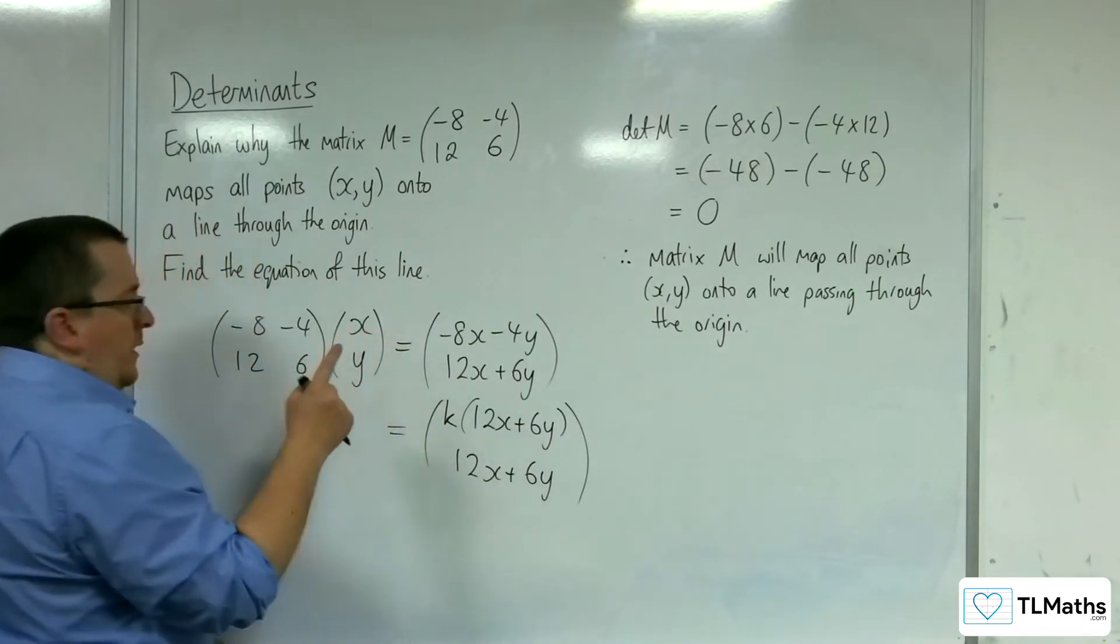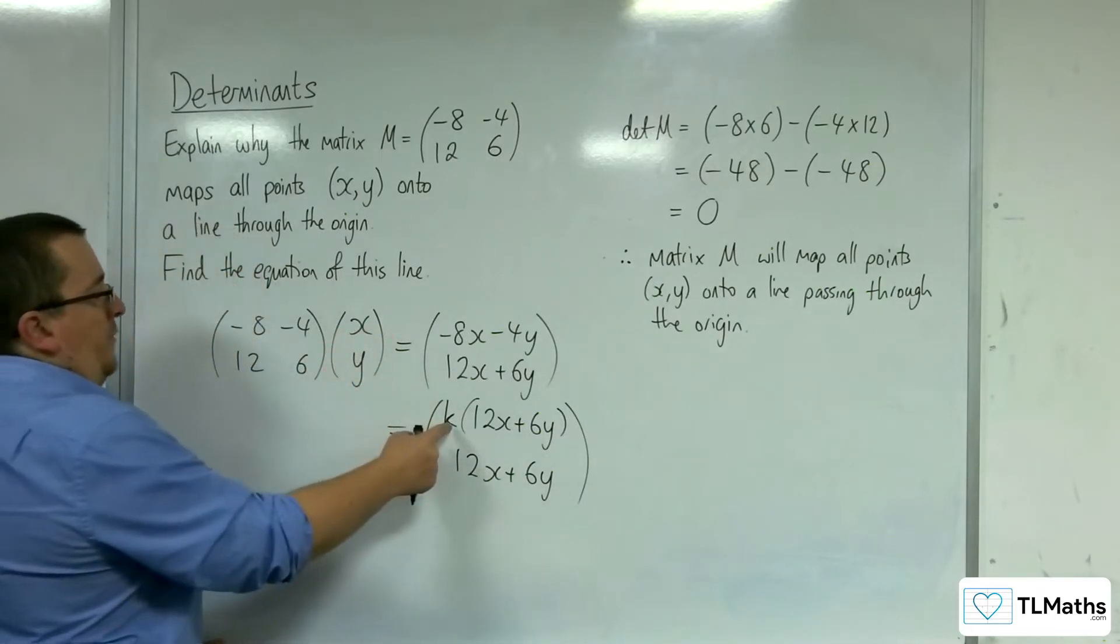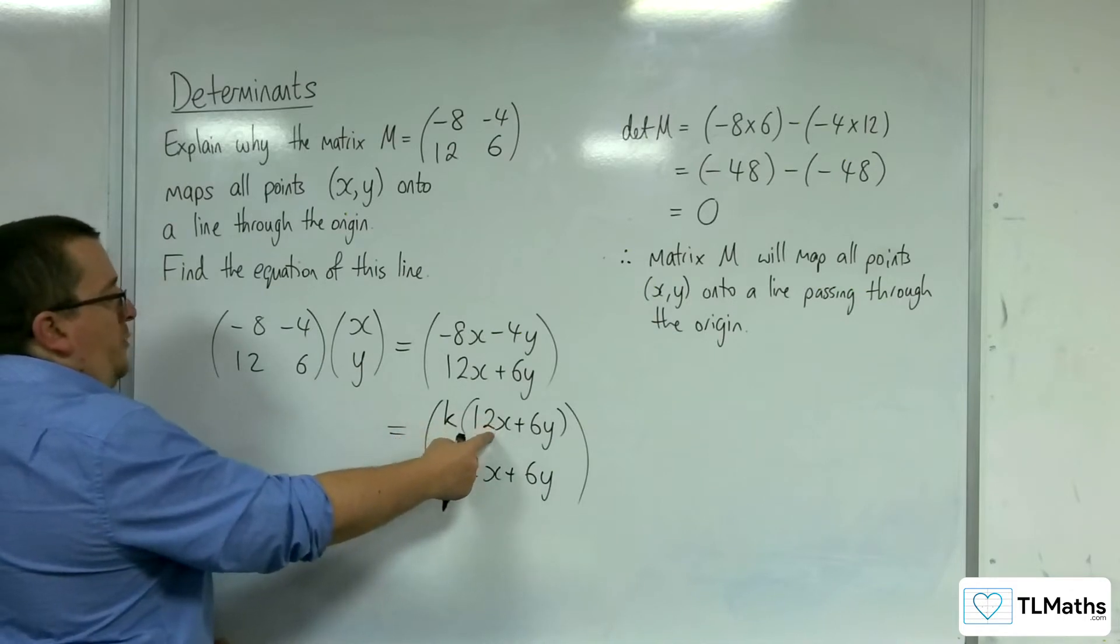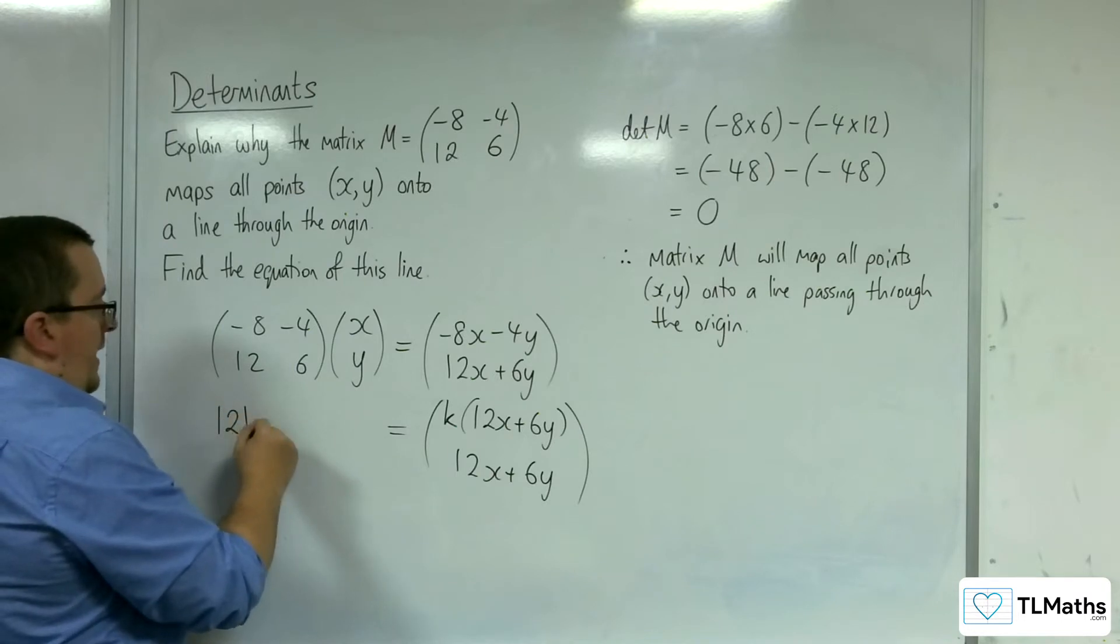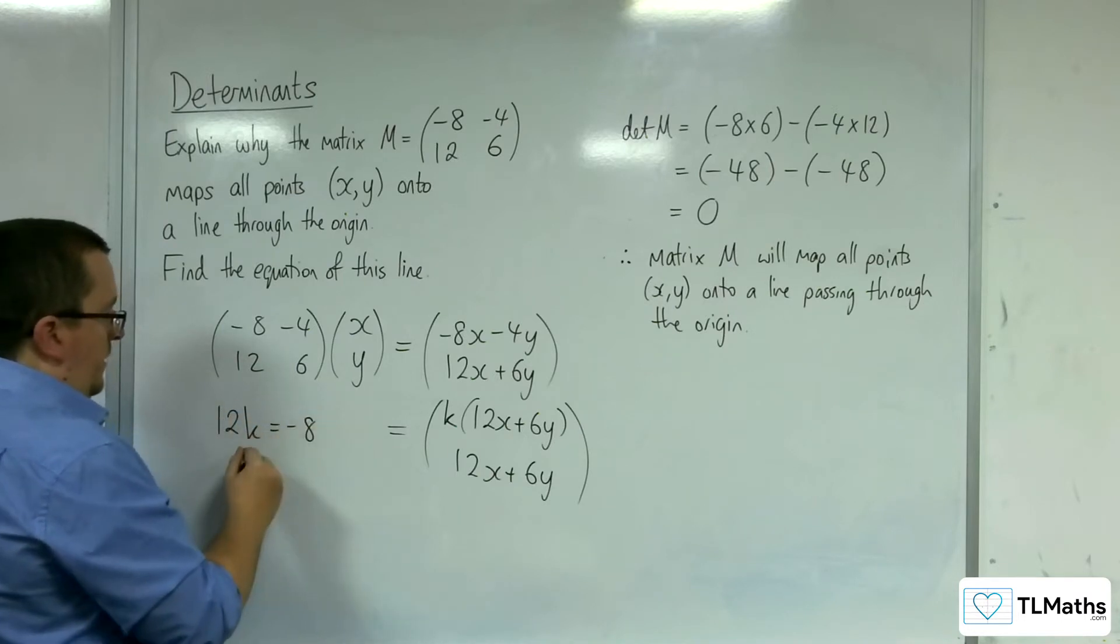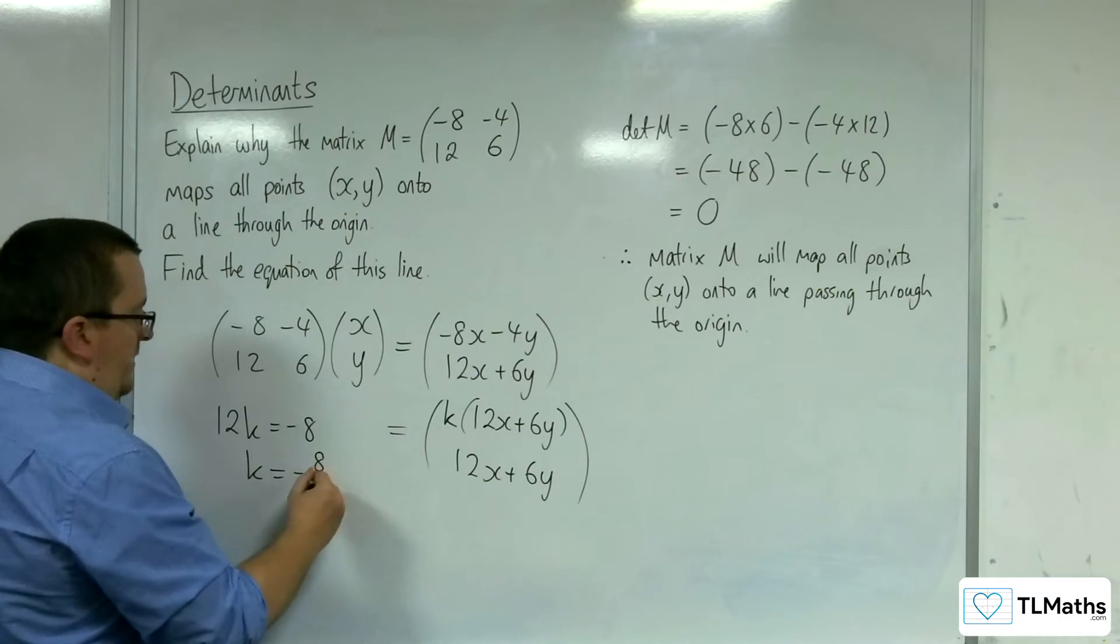Okay, now, in order to find that, I just need to find whatever would multiply with 12 to make minus 8. So, 12k is equal to negative 8.